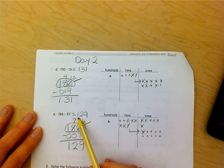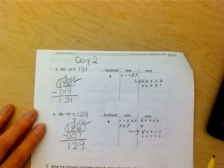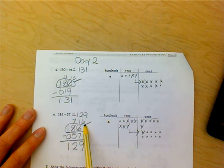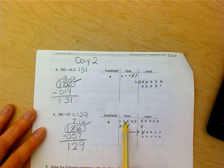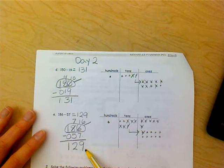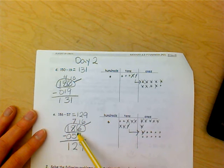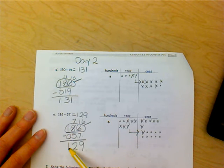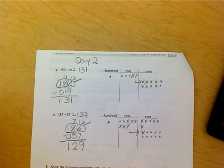You should have come up with the difference of 129 on problem C with seven tens and 16 ones after you did your chip model. 16 ones take away seven ones is nine ones. And seven tens take away five tens is two tens. And one 100 take away zero 100s gives me one 100.